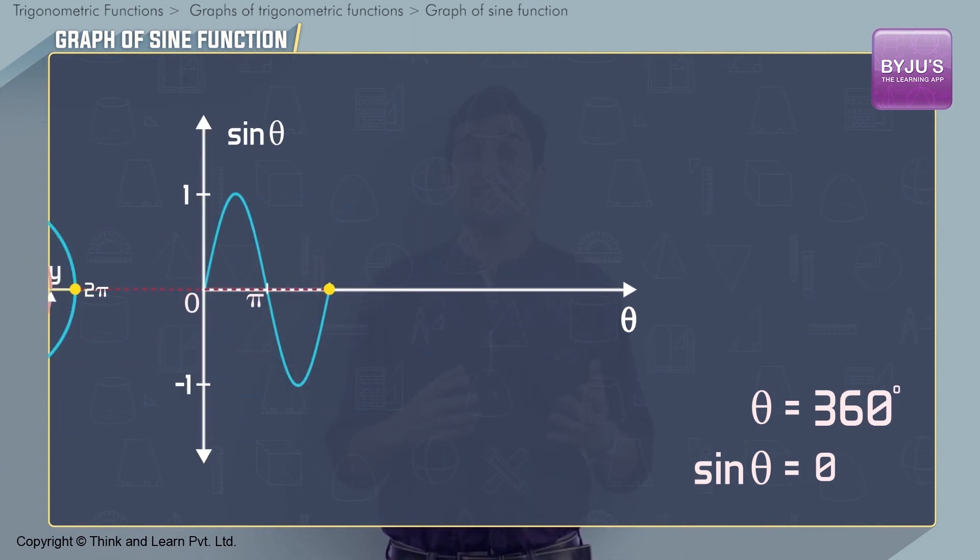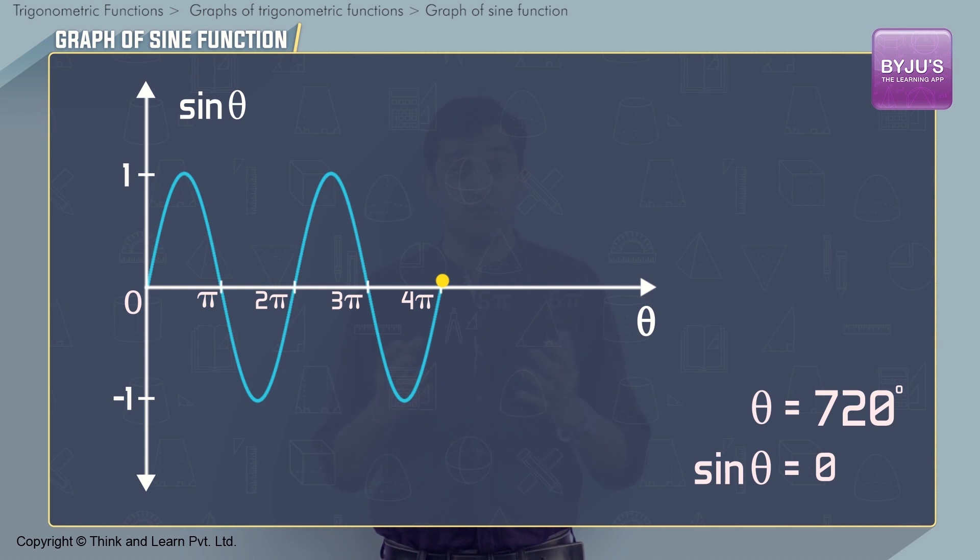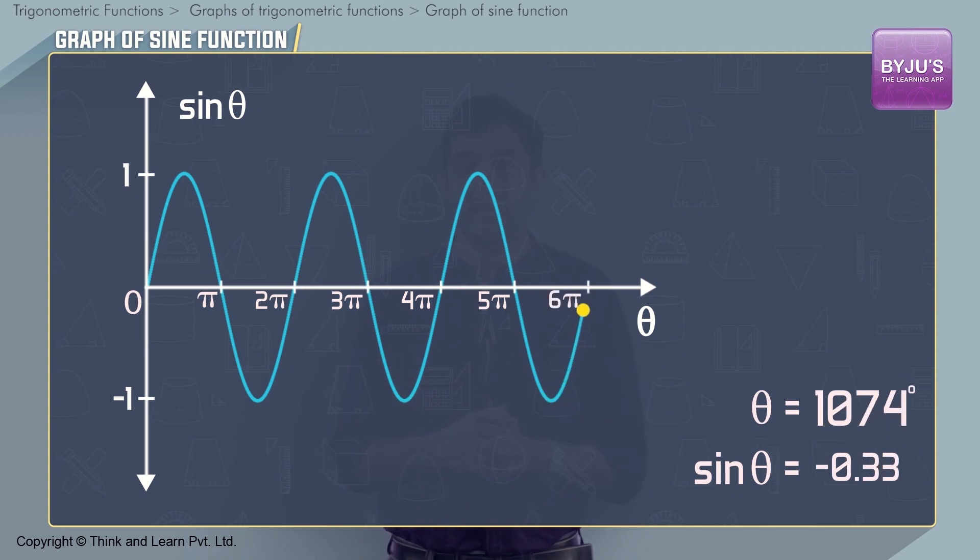If we further increase theta, the same values of sin theta start appearing up to the next complete rotation, 4π. This continues, and we can extend the graph all over the x-axis by repeating the same pattern.